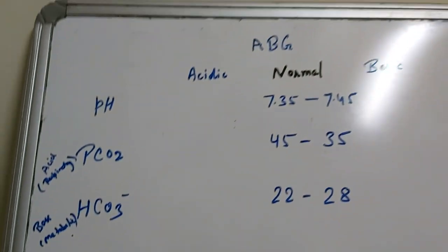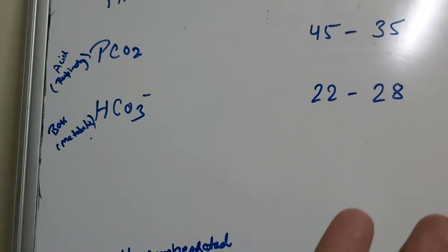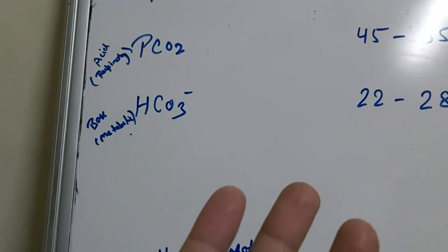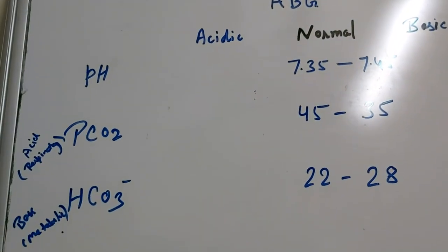If alkali is increased to that amount so that pH is compensated, pH is in the normal range, the condition is known as compensated.